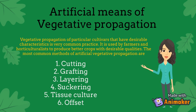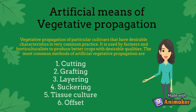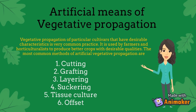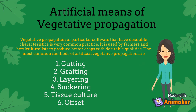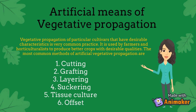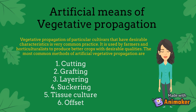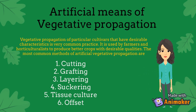Suckering: suckers grow and form a dense compact mat that is attached to the parent plant. Too many suckers can lead to smaller crop size, so excess suckers are pruned and mature suckers are transplanted to a new area where they develop into new plants.